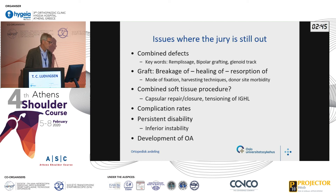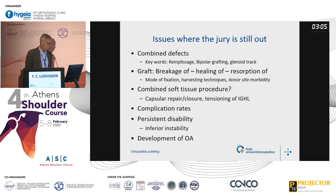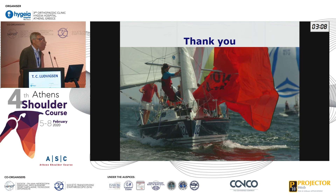Issues where the jury is still out include: combined defects, remplissage, bipolar grafting, glenoid track, graft breakage, healing and resorption, combined soft tissue procedures, complication rates, persistent disability, inferior instability — a very difficult problem to solve — and the development of osteoarthritis. So we do not have all the answers yet. Thank you.